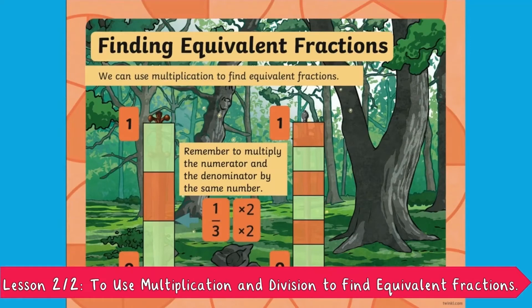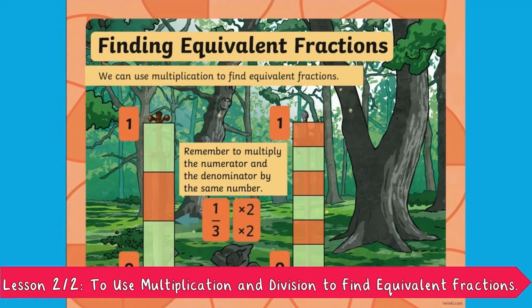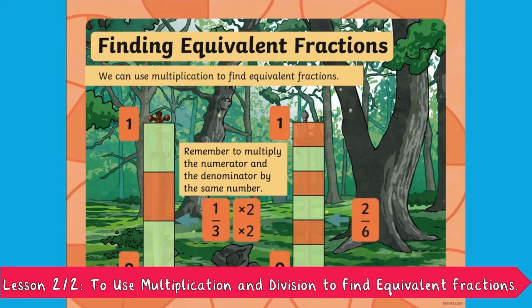In the final lesson, James teaches your children how to use multiplication and division to find equivalent fractions. The first thing you can do is times the bottom and the top by two, which makes two sixths. You can see on the number line that they both match up perfectly — that means that one third is equivalent to two sixths.